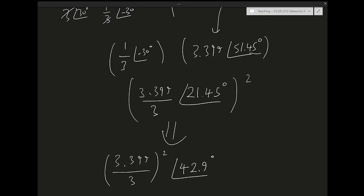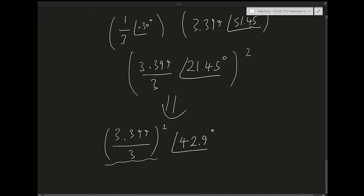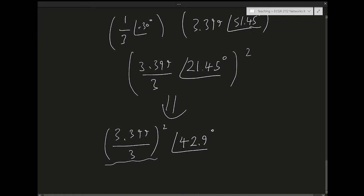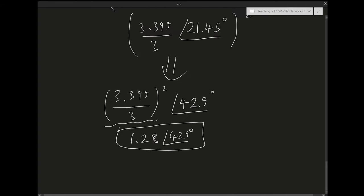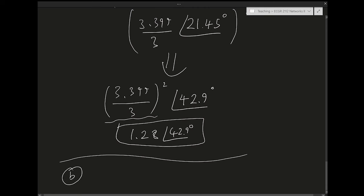21 × 2 is 42 and 0.45 × 2 is 0.9, giving 42.9°. Computing (3.39896/3)² = approximately 1.28. So the final result is 1.28∠42.9°.